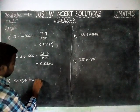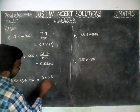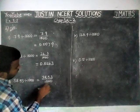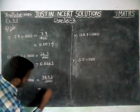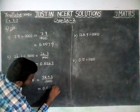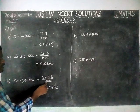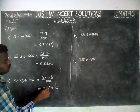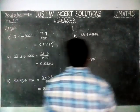Third question: 38.53 divided by 1000. Here we have 3 zeros, so we have to move 3 steps to the left-hand side. We only have 2 digits before the decimal point, but we have to move left 3 digits, so we add a 0 for the third digit. The answer is 0.03853.